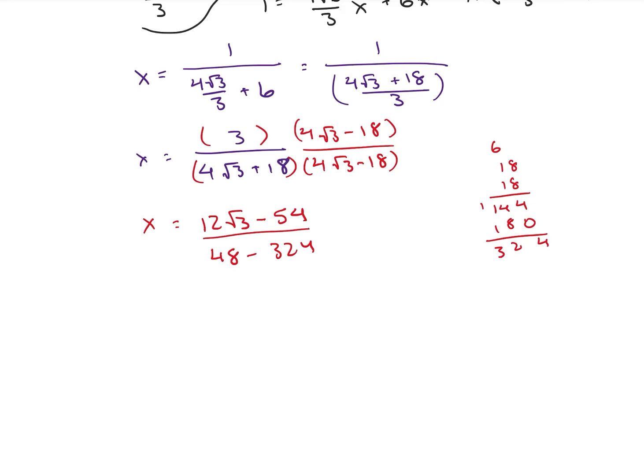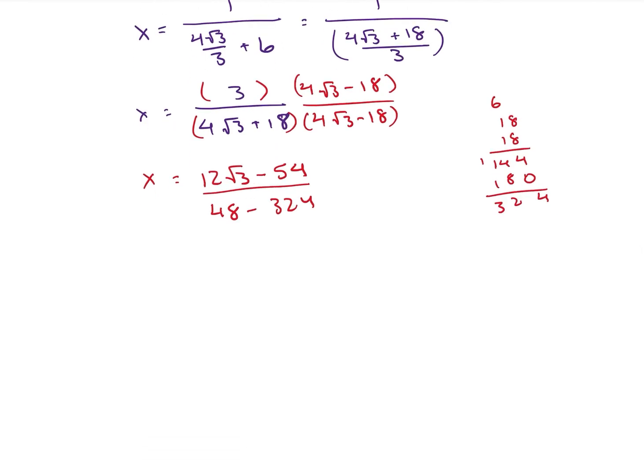And now when we go ahead and multiply that out, we're going to end up getting x is equal to, let's reverse it. So I'm going to get 54 minus 12 root 3 divided by 324 minus 48, which is going to be 276.